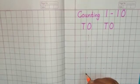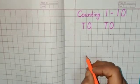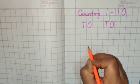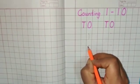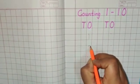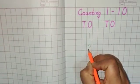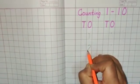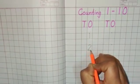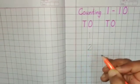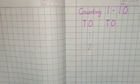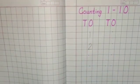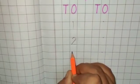Now for number 2. Get your pencil ready below the dot. Then we will take it to the top and then bring it down and then make a slipping line like this.